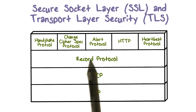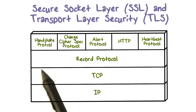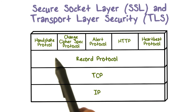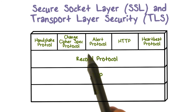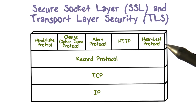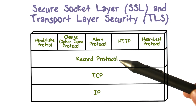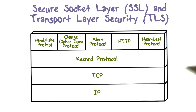Three higher layer protocols are defined as part of TLS: the Handshake protocol, the Change Cipher Spec protocol, and the Alert protocol. These TLS-specific protocols are used in the management of TLS exchanges.